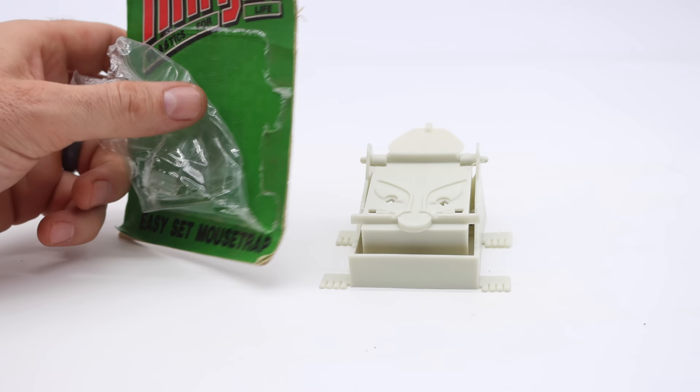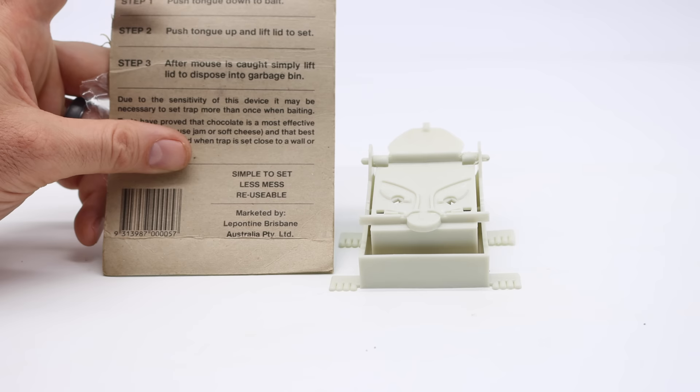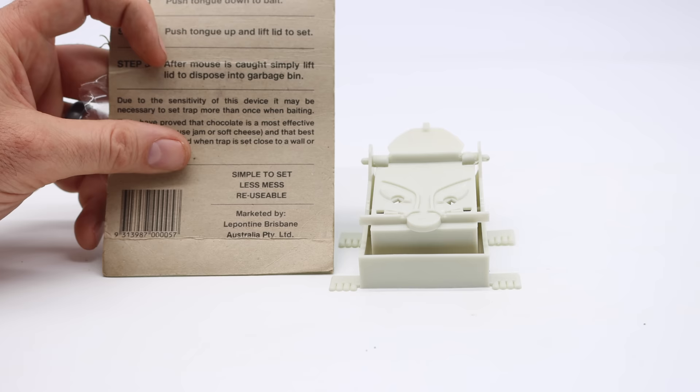The easy set mousetrap. I've learned it's not very easy to set. They say push the tongue down to bait. Step two, push the tongue up and lift to set. After the mouse is caught, simply lift the lid and dispose into the garbage bin.